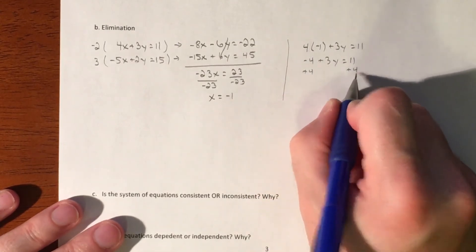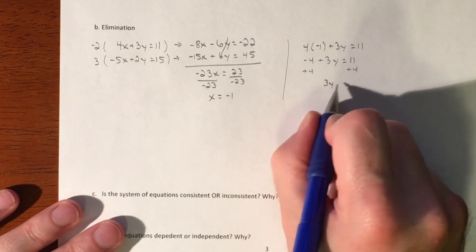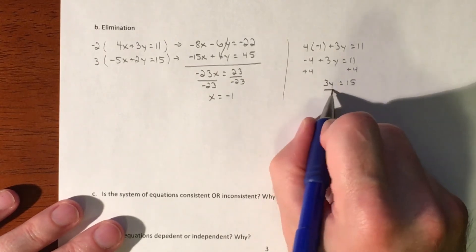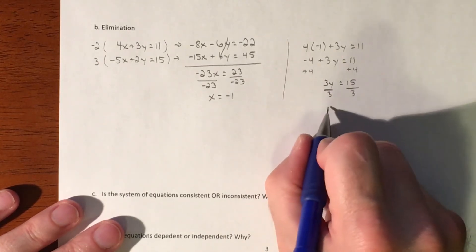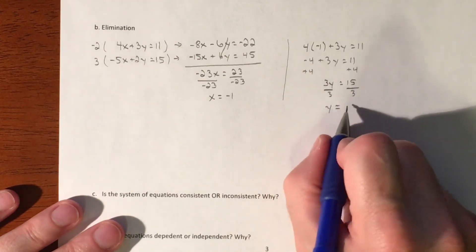Add 4. 3y equals 15. Divide by 3. Y equals 5.